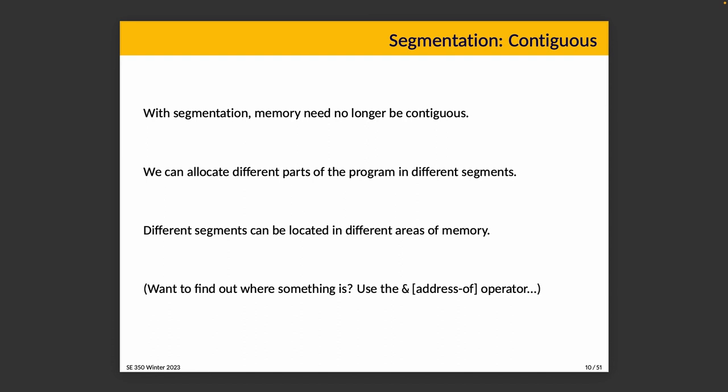Segmentation means memory doesn't have to be contiguous anymore. Different segments of a program can be located in different areas of memory. We can allocate different parts of the program in different segments, and if you want to find where something is in memory, you can use the address-of operator and see some interesting results.